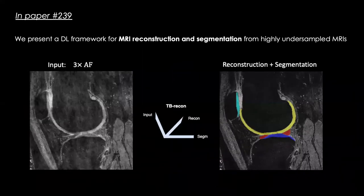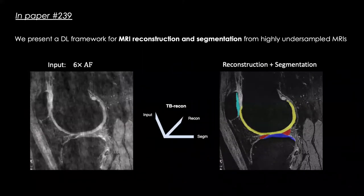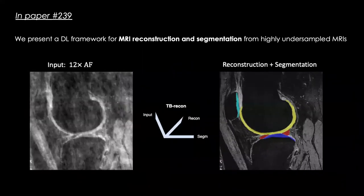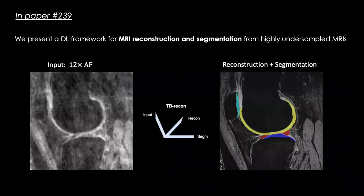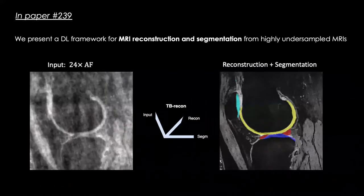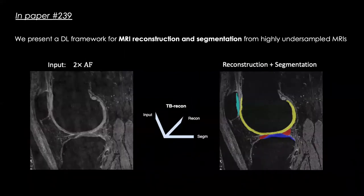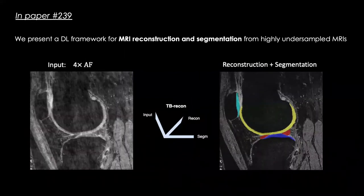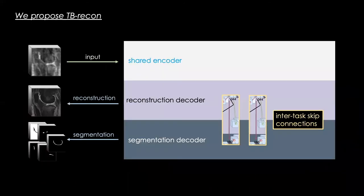In this retrospective study, we show that a similarly accurate segmentation can be achieved by acquiring a fraction of the case base, accelerating acquisitions up to 24 times. We propose TP Recon, a deep learning framework for simultaneous image reconstruction and segmentation.